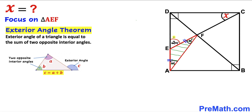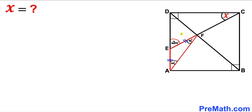So this angle is two alpha. Now let's make an observation: this angle is 90 degrees, and this is our main diagonal of the square. Therefore this angle is going to be 45 degrees and 45 degrees, and this angle is 45 degrees as well.